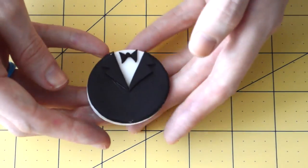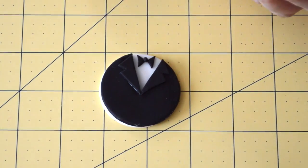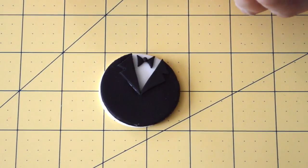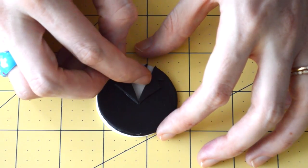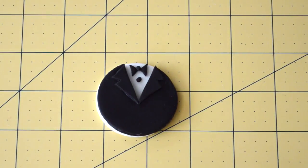Now we're going to add some little dots for the buttons. I'm just going to do a couple of pieces of this black fondant. Secure this wherever you want. I'm going to go right below it. You can do two or three buttons, whatever suits your taste.